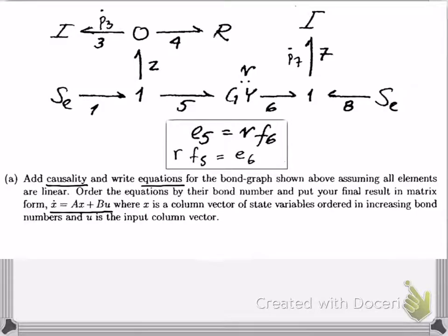Let's take a look at this example here. For time purposes, the bond graph is already given for you, and the gyrator equation is shown in the box there. The question says from this bond graph model, we're going to add causality and write the state equations, assuming all the elements are linear, and then convert the state equations and write them in matrix form.